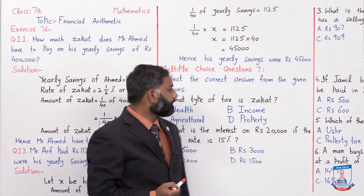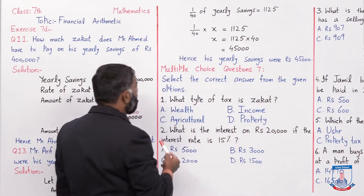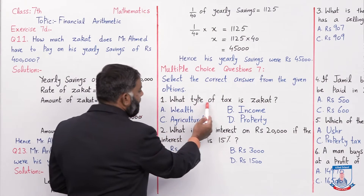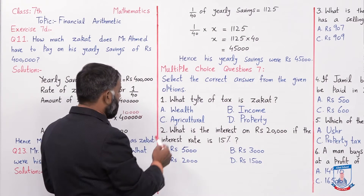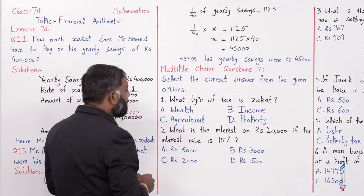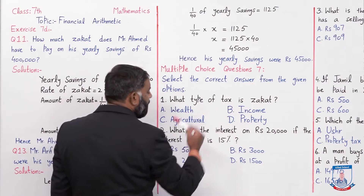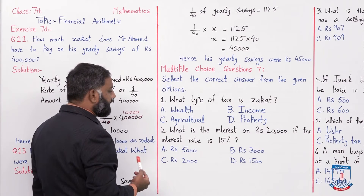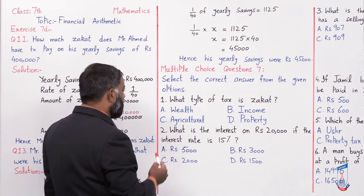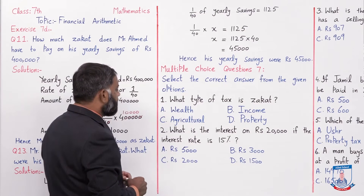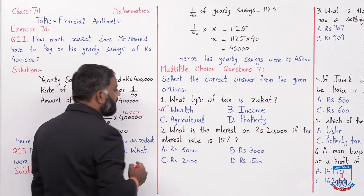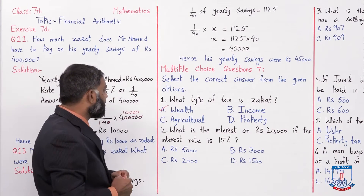Ab multiple choice questions karenge Chapter 7 ke. First MCQ: What type of tax is zakat? Options: A) Wealth, B) Income, C) Agricultural, D) Property. Income mein sirf aap ki mahana ya salana amdini aati hai. Agricultural mein zaraat ki amdini. Property mein property ki amdini. Lekin wealth ek aisi cheez hai jis mein income, gold, silver, property, agricultural — tamam tarah ki amdini shamil hoti hai. To zakat wealth pe apply hoti hai. Correct answer: A.